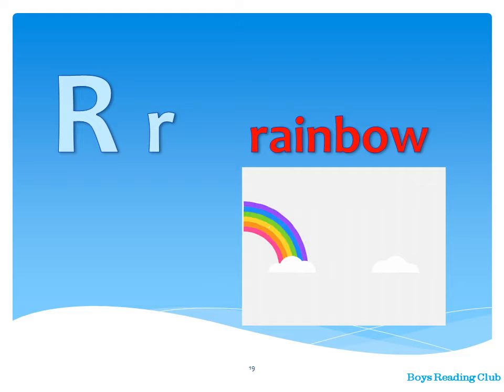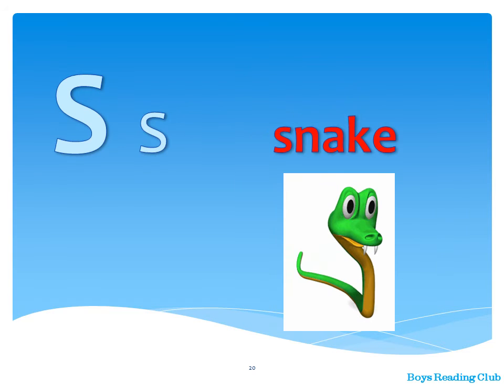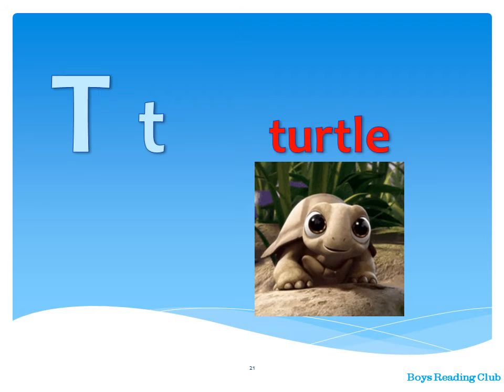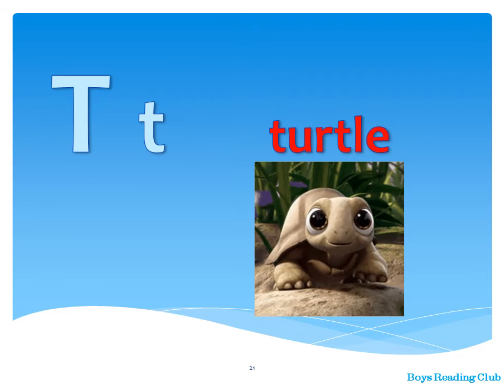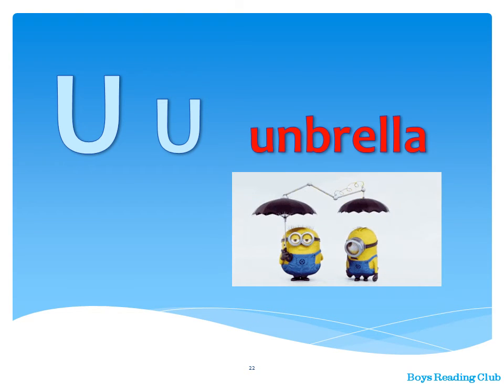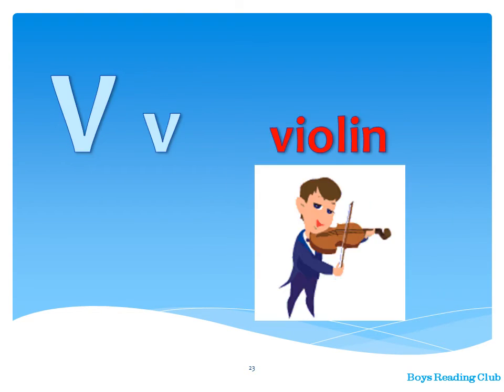Q — Queen. R — Rainbow. S — Snake. T — Turtle. U — Umbrella.